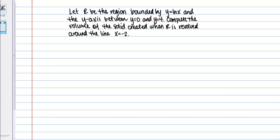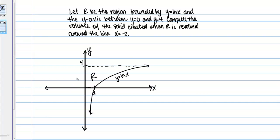In this next example, we're told to let R be the region bounded by y equals natural log of x and the y-axis between y equals 0 and y equals 4. Compute the volume of the solid created when R is revolved around the line x equals negative 2. Here I have the function y equals natural log of x and the y-axis between y equals 0 and y equals 4 — that's my region R. Instead of revolving around the y-axis, we're revolving it around the line x equals negative 2.